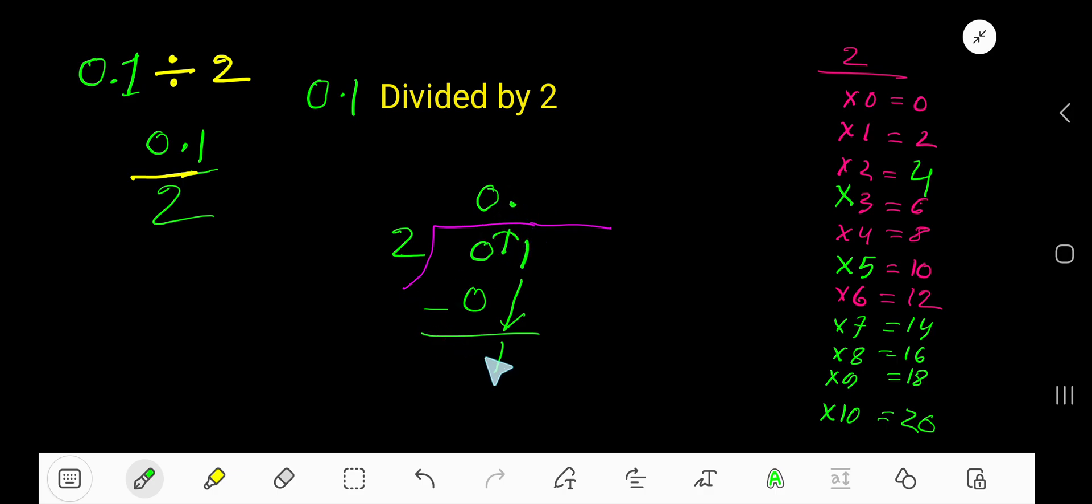2 goes into 1 how many times? Actually, 1 is less than 2, so 0 times. Then 0 times 2 is 0. If you subtract, you're getting 1 again.